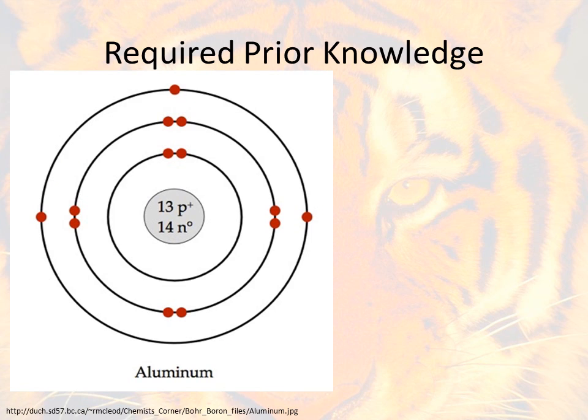Now in eighth grade, some of the required prior knowledge that you have was all about the structure of the atom. Things you needed to know were that protons, neutrons, and electrons are your three subatomic particles. You really do need to know the mass of each one of those. It's going to help you out a lot in a little bit.